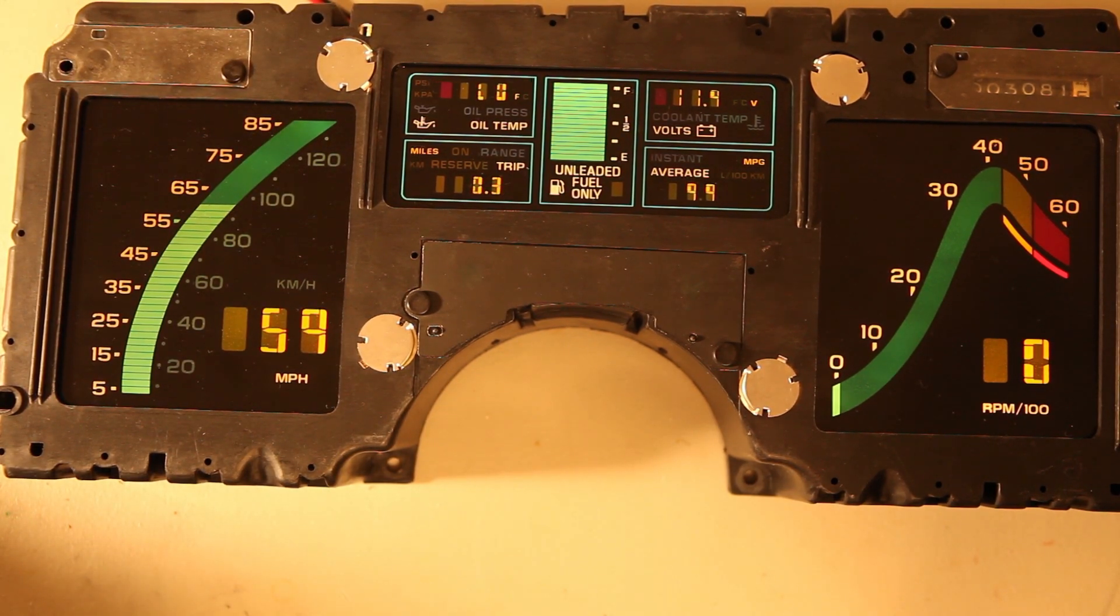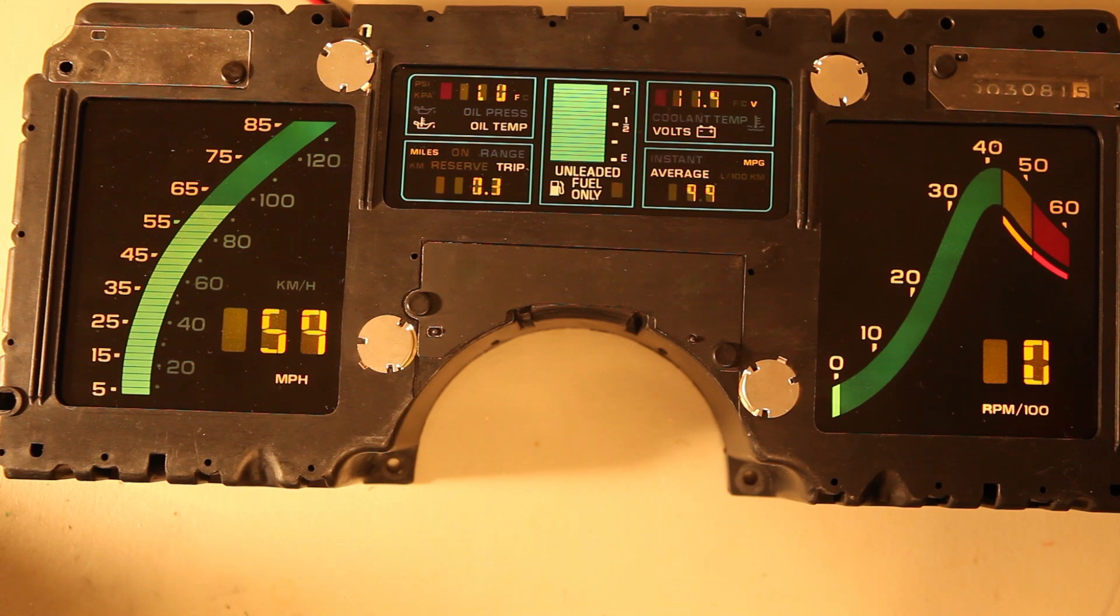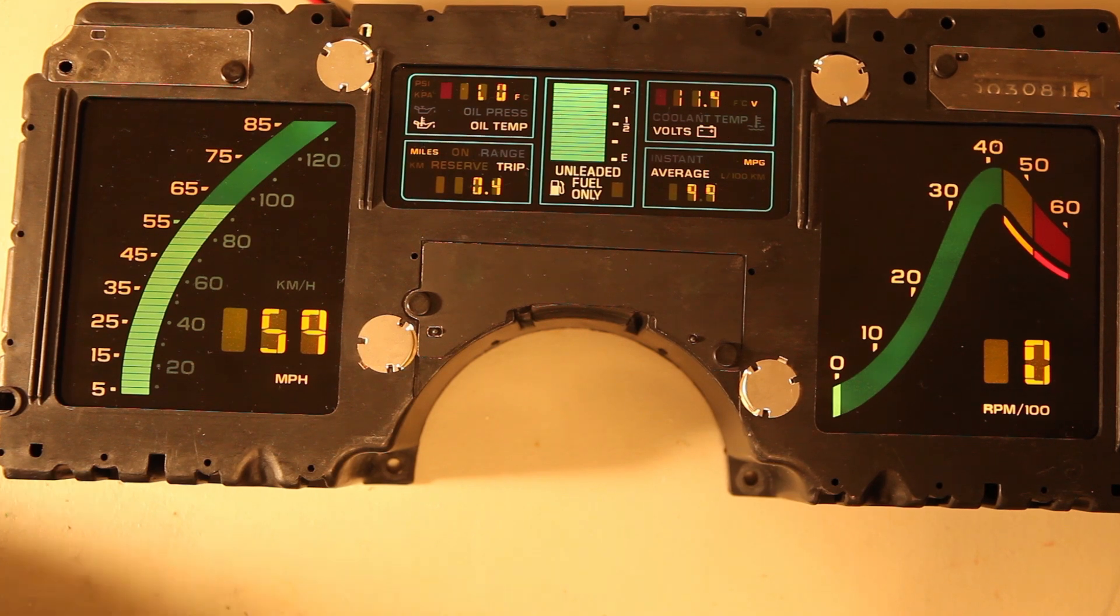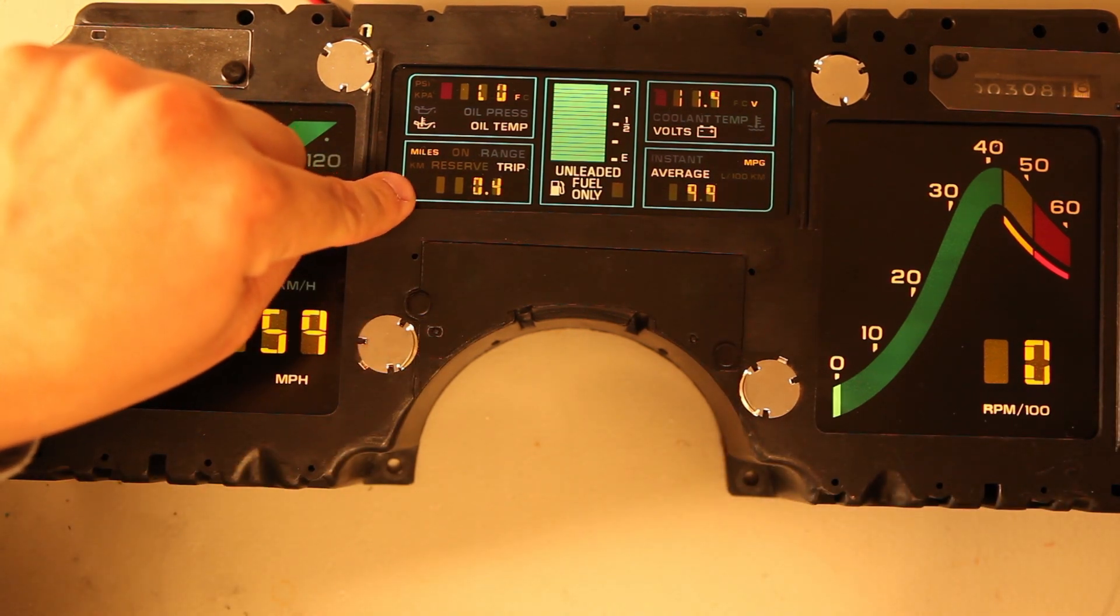We should see approximately 60 miles per hour, and we should also see the odometer motor turning. We also see the tripometer increasing.